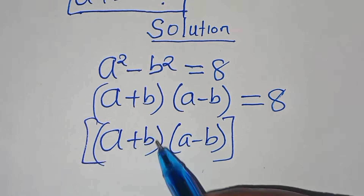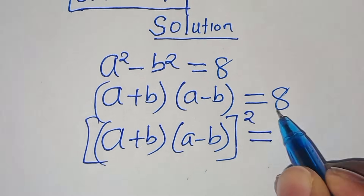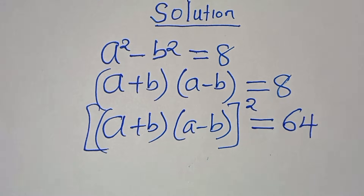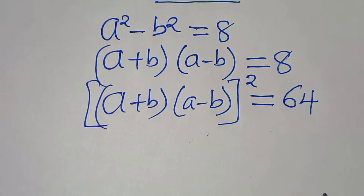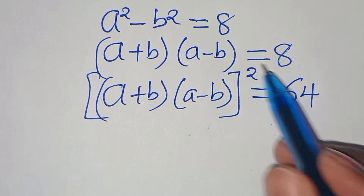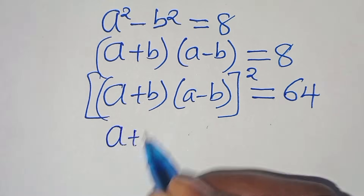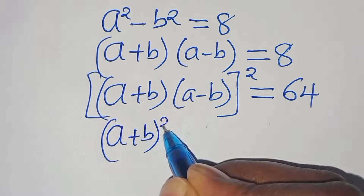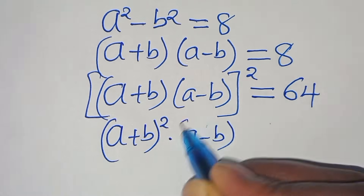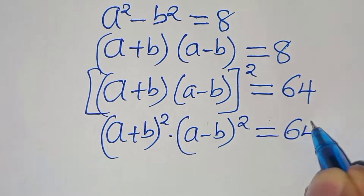Squaring both sides gives us (a plus b) times (a minus b), all squared, equals 8 squared, which is 64. This is the same as (a plus b) squared multiplied by (a minus b) squared equals 64.